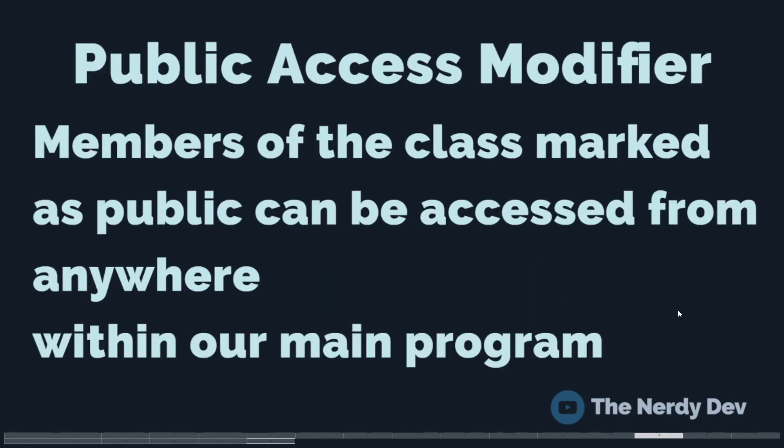So what do we mean by public access modifier? That lies in understanding what are public members of a class. Coming to public members, they are declared public, which means they can be accessed from anywhere within our main program. As a side note, all data members and methods of a class are by default public.